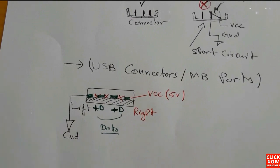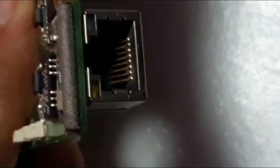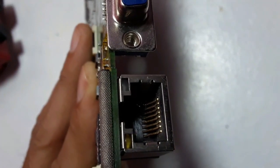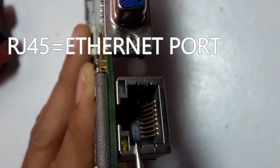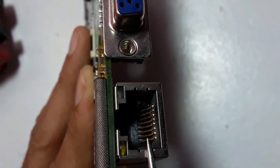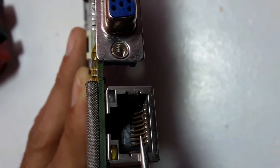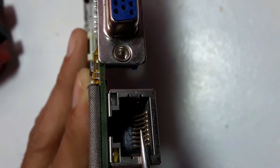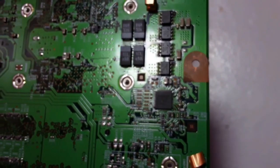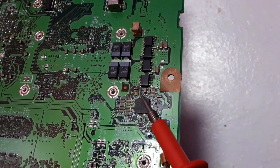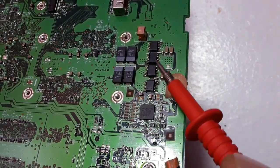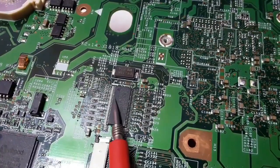The same applies to other connectors. For example, RJ45 connectors have eight pins — if any pins are bent or touching, you will get a short circuit, especially in the ICH, and the motherboard will fail. You can also check other components including control ICs, MOSFETs, tantalum capacitors, and the clock generator IC.